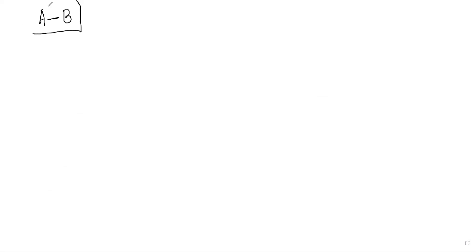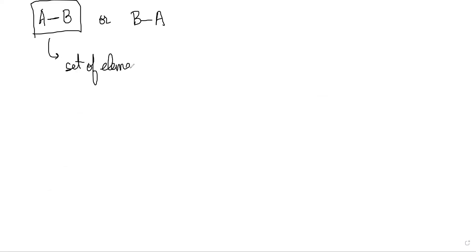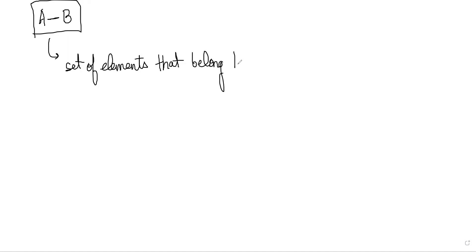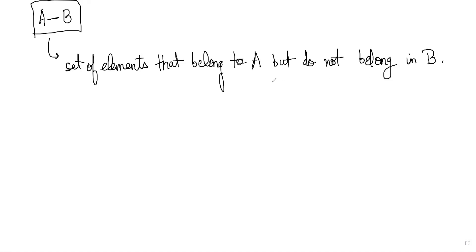We also have the difference of two sets, A minus B. A minus B is the set of elements that belong to A but do not belong in B. Basically, it's the set of all elements in A that are not present in B.